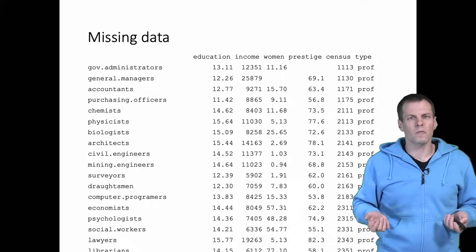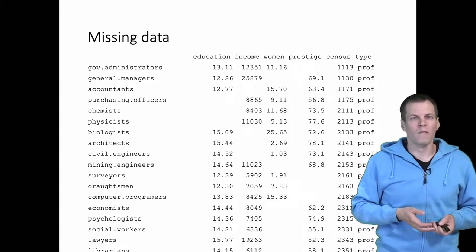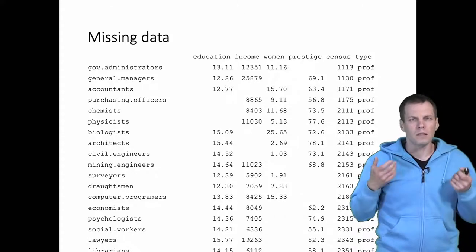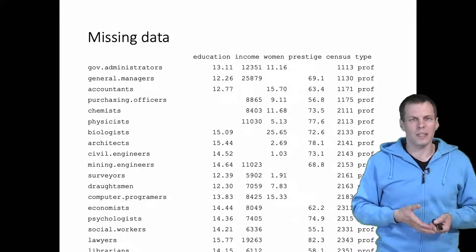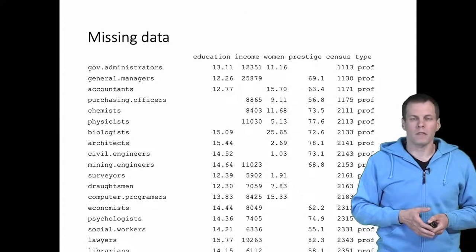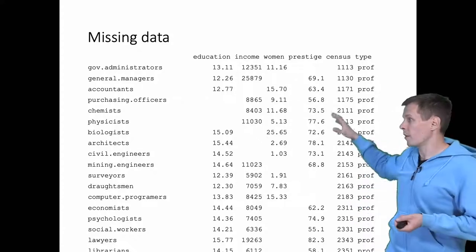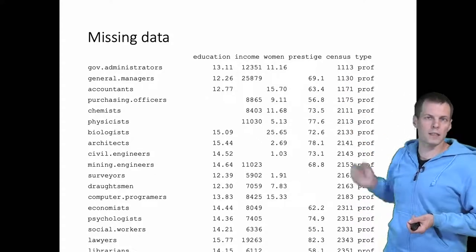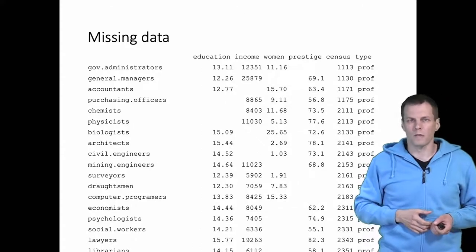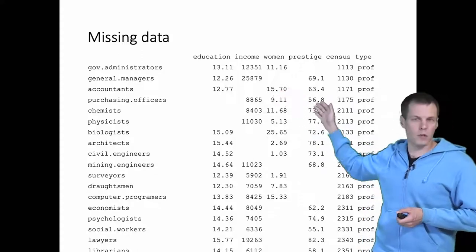What if there is more missingness? If we have a missing value for one variable in every case, and we run this regression analysis with this data, then the default regression command will just report that there is no data to run, because by default the action is to drop every case that has any missing data.